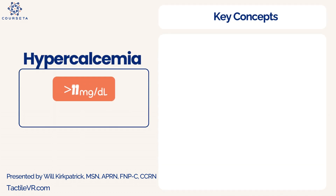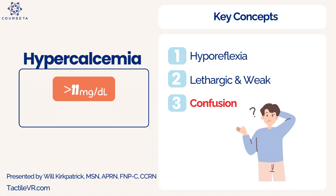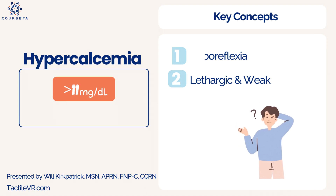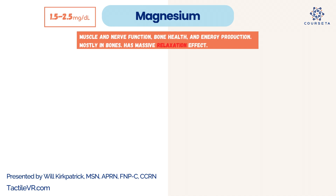Hypercalcemia is anything greater than 11, and it's the exact opposite of hypocalcemia. Patients will be slow and lethargic with poor deep tendon reflexes. Importantly, they will often have confusion and cognitive changes. Risk factors commonly questioned for hypercalcemia include renal stones and fractures.